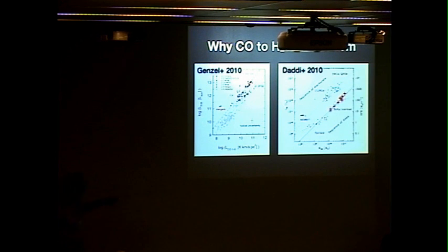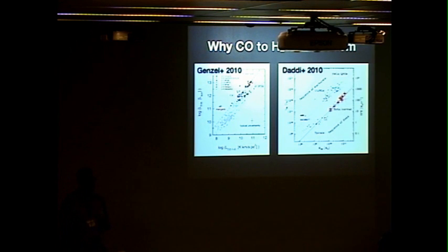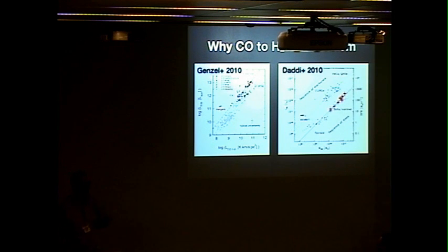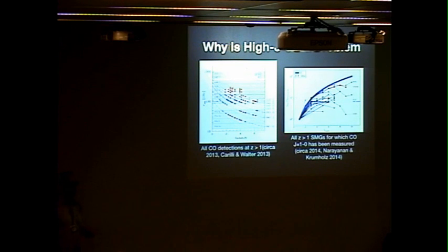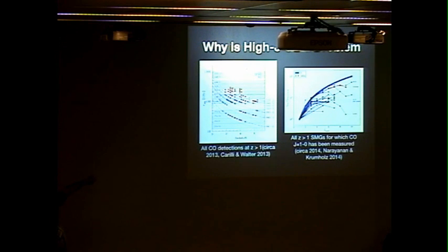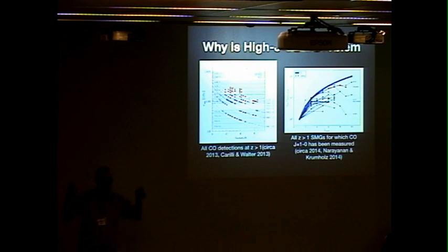Problem number two, which these groups have largely ignored, is that the L_CO they plot is L_CO(1-0) — but that's not actually what was measured for most of these sources. The CO(1-0) line, if you are beyond redshift about one, shifts into a really obnoxious part of the atmosphere and gets very hard to observe. So what was really done in that data is some higher J CO line was observed, and then it was converted into a CO(1-0) line.